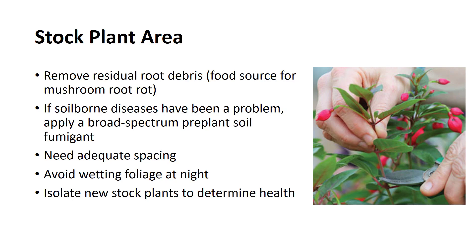If soil-borne diseases have been a problem in the past, such as bacterial crown gall and root-knot nematode, the land should not be used for stock plants, or the grower could apply a broad-spectrum pre-plant soil fumigant or manicide. Field-grown stock plants must allow adequate spacing between plants to allow rapid drying of foliage, impede the spread of pathogens and other pests among plants, and facilitate better spray coverage of pesticides. Application of irrigation water should be managed to supplement natural rainfall to avoid saturated soils or drought conditions that can stress root systems. Plant stress is a predisposing factor to root diseases.